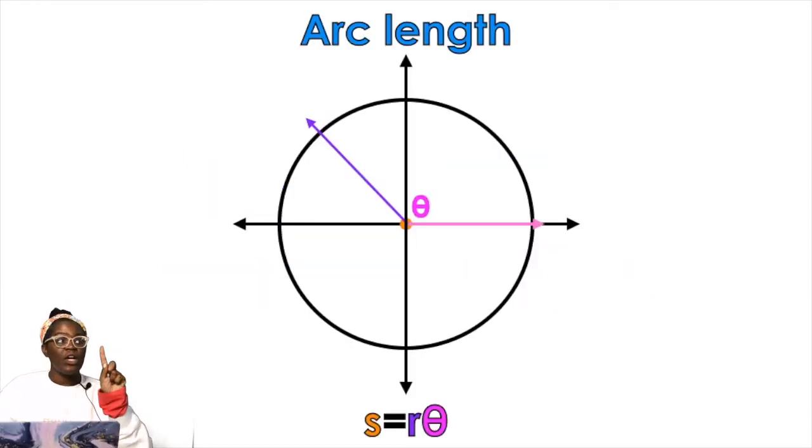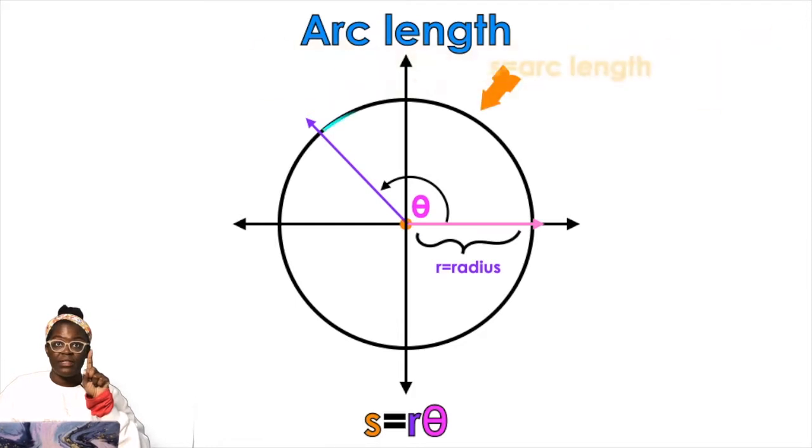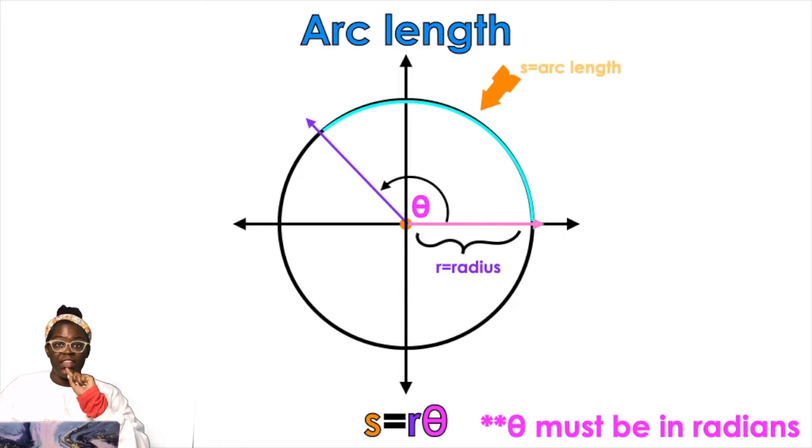Okay, so when we're talking about arc length the formula is s equals r theta, where theta is the angle and r is the radius. What we're finding is that blue length and theta must be in radians.